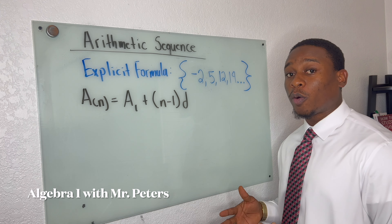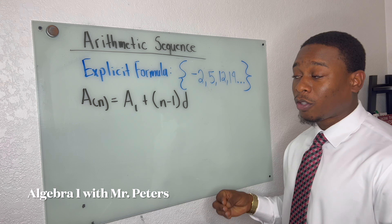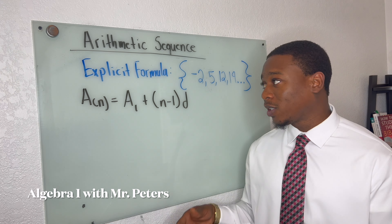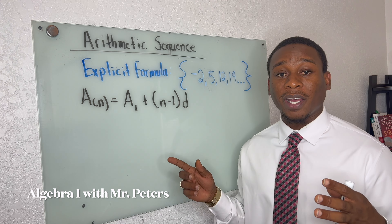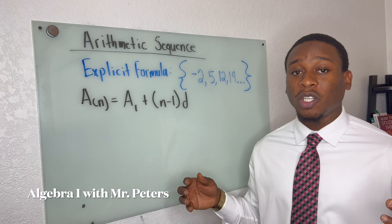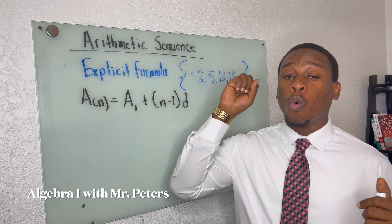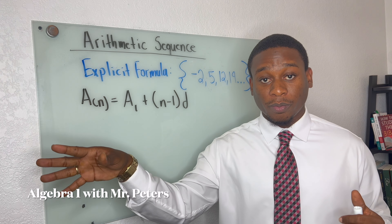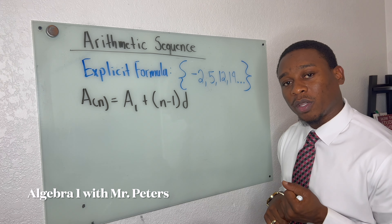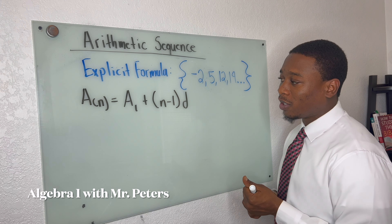The difference with this formula compared to the recursive formula is that when we use the explicit formula, we can use it to find any number in the sequence, whether it's the 50th term or the 100th term. When we talk about the recursive formula, we're talking about the next number in the sequence.